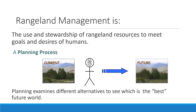Historically, and even today, one of the desires of humans on rangelands is to produce livestock and livestock products. It's one of the few ways that we can capture the energy from the sun and turn it into something useful to us. But that has changed a lot. What humans want from rangelands has changed significantly in the last 50 years or so, at least in the US.